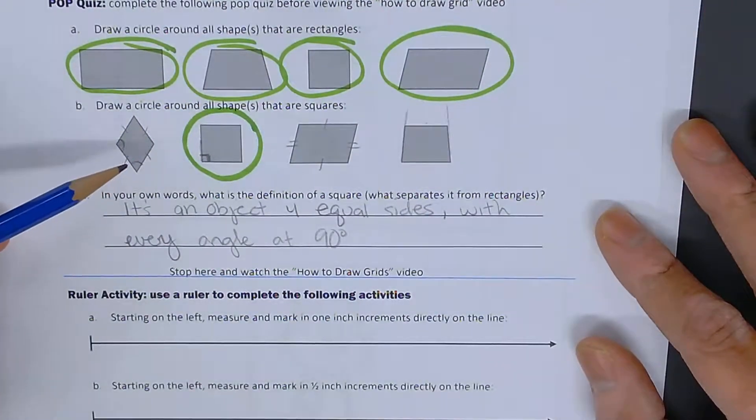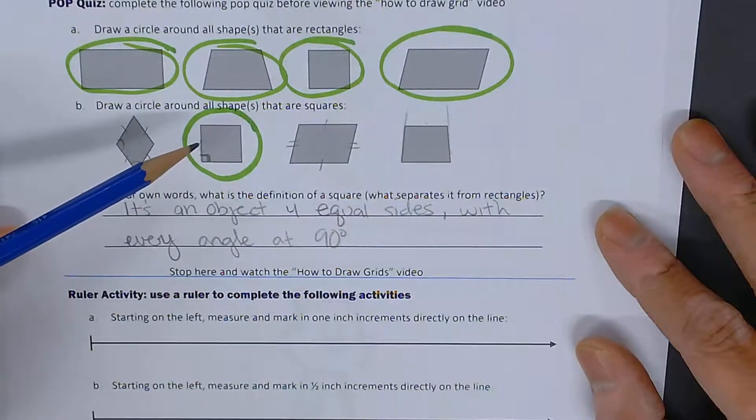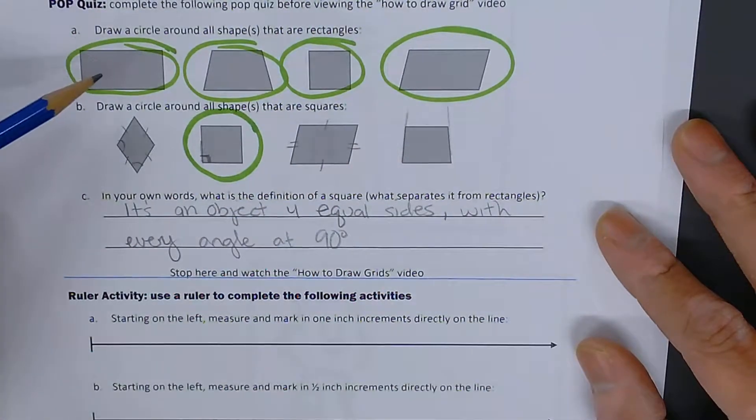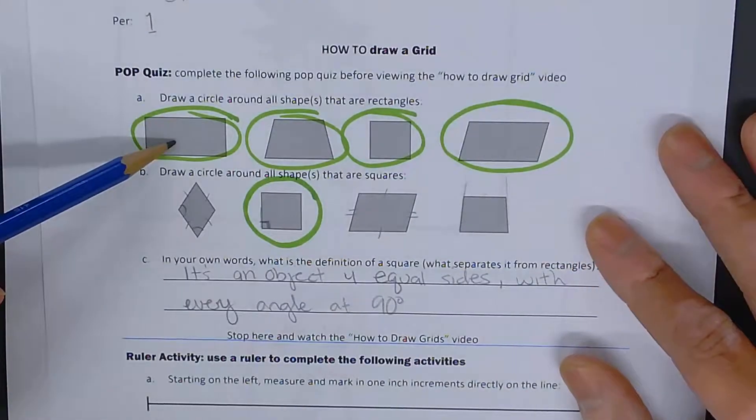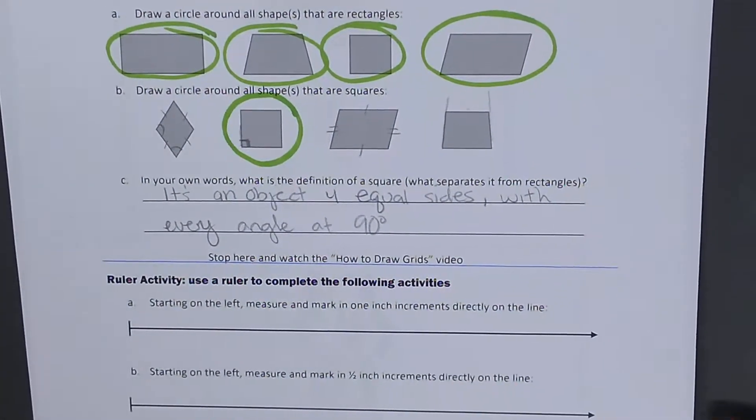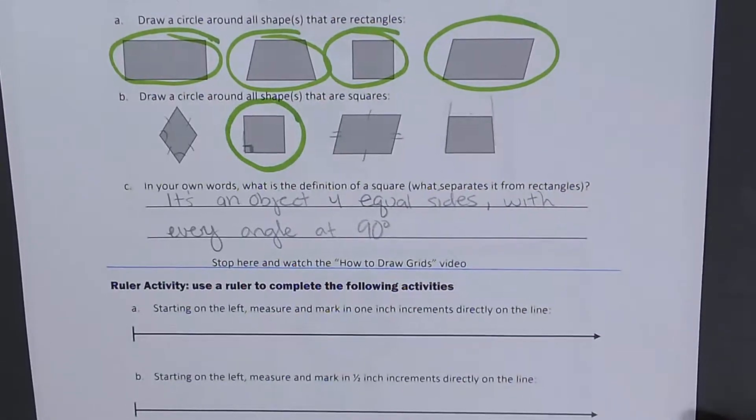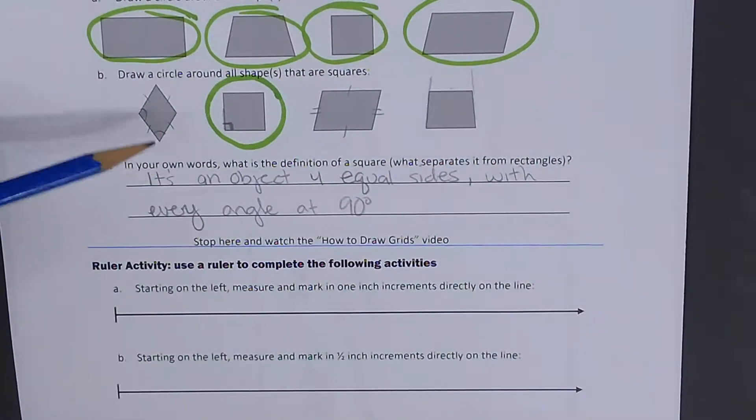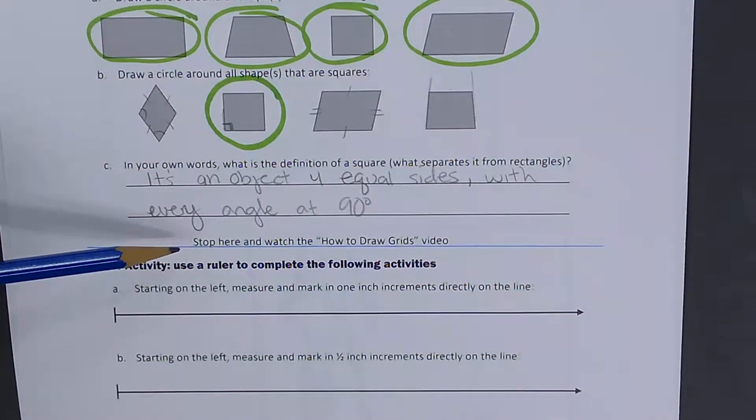So just for definition purposes, this is a rhombus, that's a square, parallelogram, trapezoid. And then this is just an equilateral rectangle. Any questions about that? I hope not. If you have any questions, you can always contact me at smartinez at psd1.org.